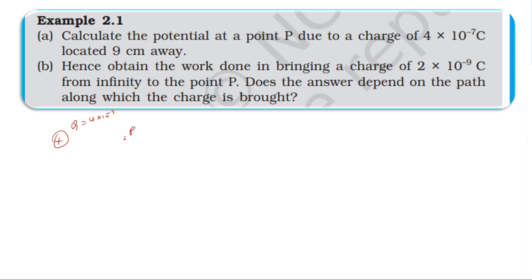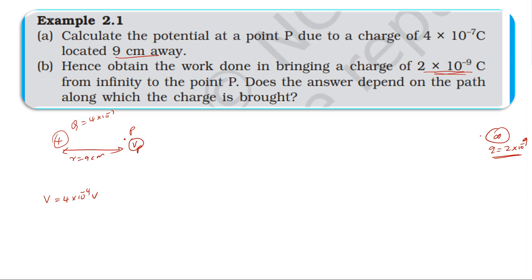At the point P, the potential V = 4×10⁴ volts. Now, the charge being brought is 2×10⁻⁹ coulomb. We bring it from infinity to the point P. At infinity, we select that as the initial point, and 2×10⁻⁹ coulomb is the charge being moved.